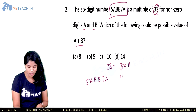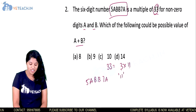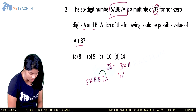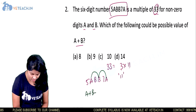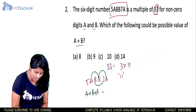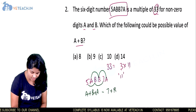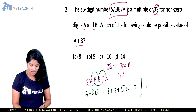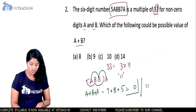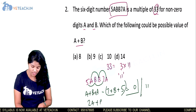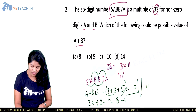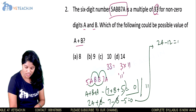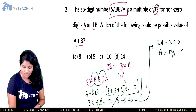First, let us check divisibility by 11. The difference between the sum of alternate digits should equal 0 or 11. So: (a + b + a) minus (7 + b + 5) should equal 0 or 11. Taking it equal to 0, we get 2a minus 12 equals 0, so a equals 6.